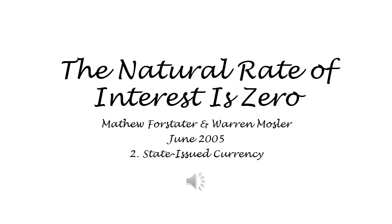A key distinction is that between the government as issuer of a currency and the non-government agents and sectors as users of a currency. Households, firms, state and local governments, and member nations of a monetary union are all currency users. A state with its own national currency is a currency issuer. The issuer of a national currency operates from a different perspective than a currency user. Operationally, government spending consists of crediting a member's bank account at the government's central bank or paying with actual cash. Therefore, unlike currency users, and counter to popular conception, the issuer of a currency is not revenue-constrained when it spends. The only constraints are self-imposed, including no overdraft provisions, debt ceiling limitations, etc.